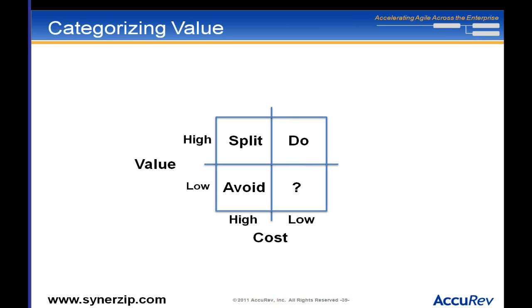The worst case is low value and low cost — that's really hard, one you might want to defer or potentially avoid. If it's high cost and low value, you want to avoid that — it's not clear you'd ever want to do it. Then you've got high value and high cost: don't automatically avoid those, because the thing you think is high cost and high value may actually consist of multiple stories.